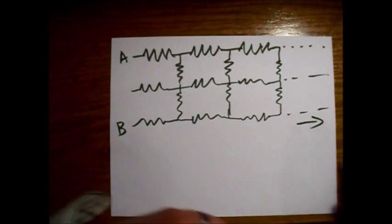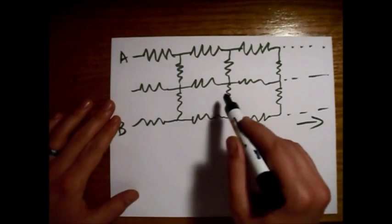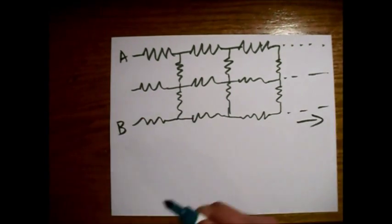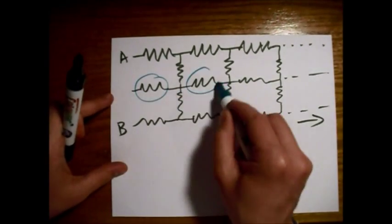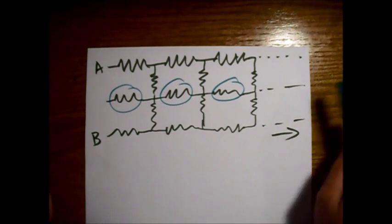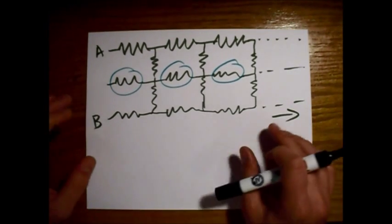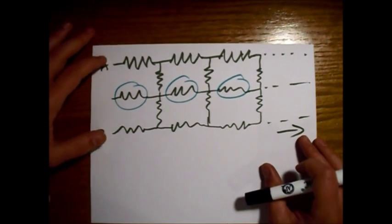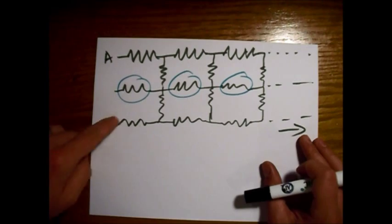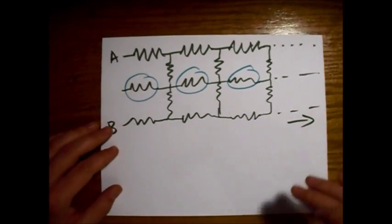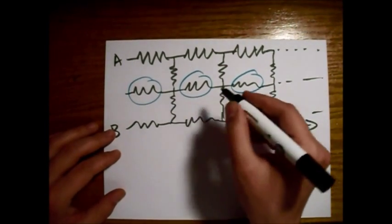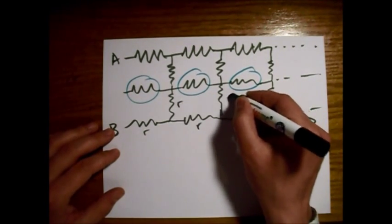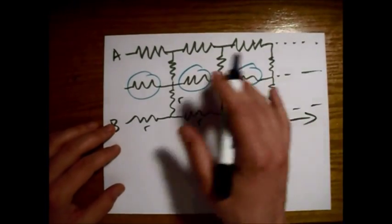The first thing we can notice is that we don't have to worry about these middle resistors here at all. They don't have anything to do with the resistance between A and B, so we'll just toss those out. These will all be the same resistance — we'll call it little r. It's the same everywhere.